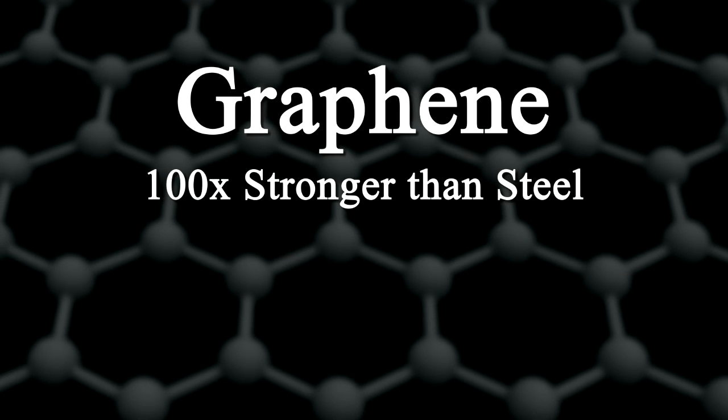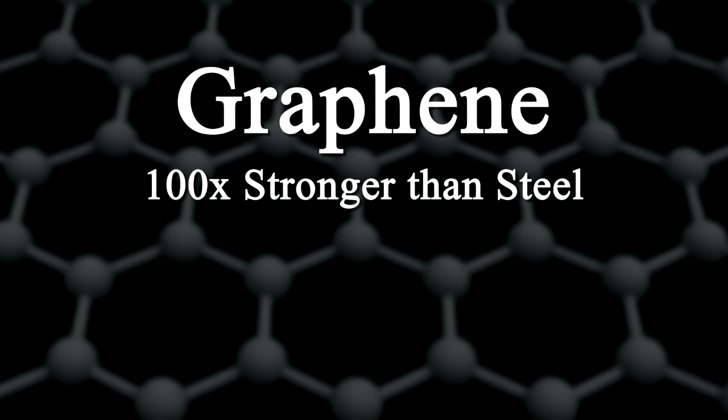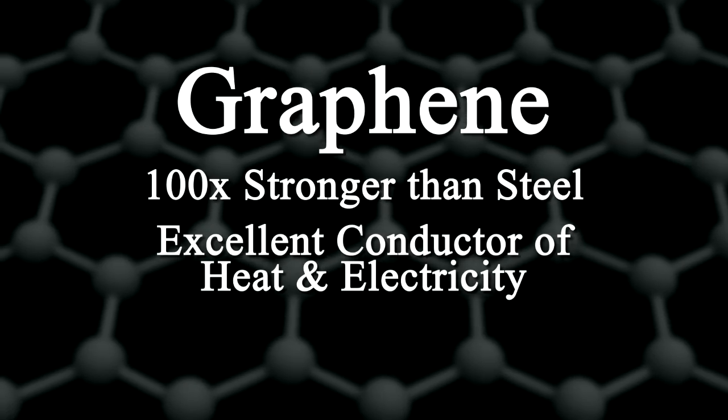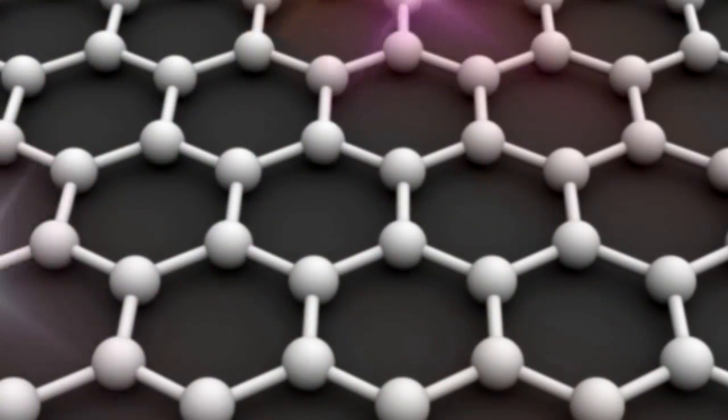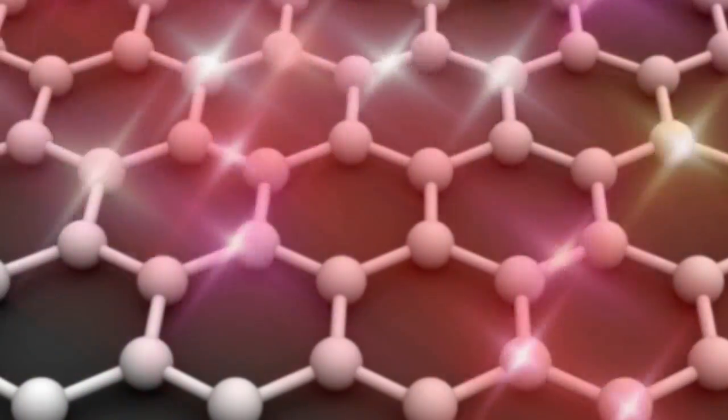Graphene is 100 times stronger than steel and conducts electricity and heat better than most materials. This means it moves electricity and heat more efficiently from one place to another.